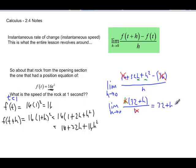And then we can say h becomes 0. So I can put a 0 here, and I'm going to end up with 32. 32 what? 32 feet per second.